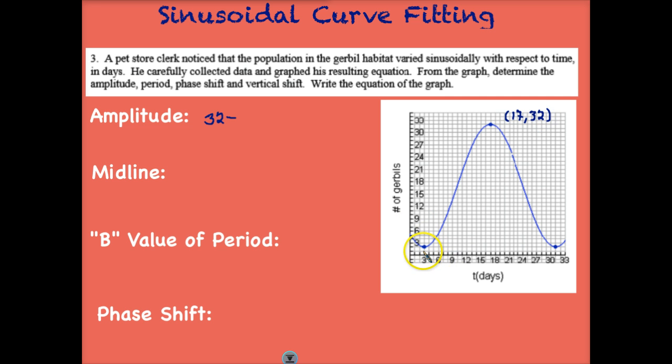And our low, and our low right down here looks like it's at 3, 2. So our low is 2. If we take 32 minus 2 and divide by 2, we get 15. So we know that our amplitude is 15.